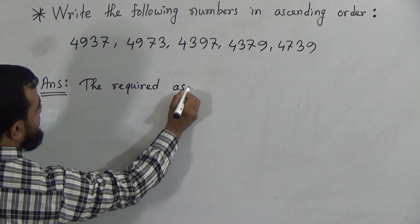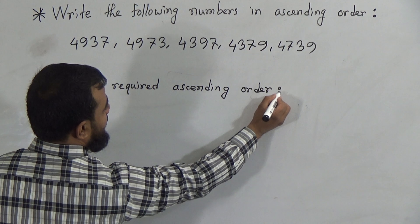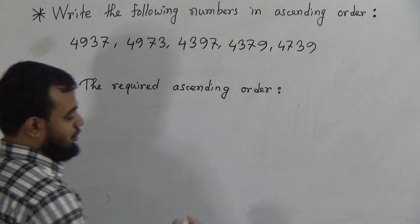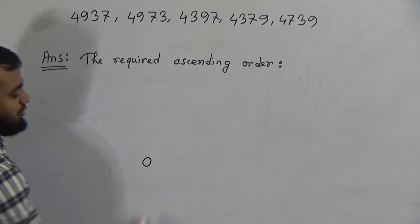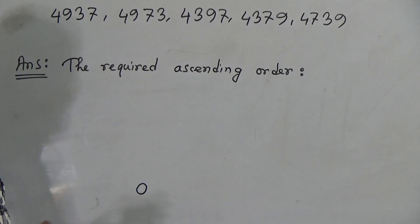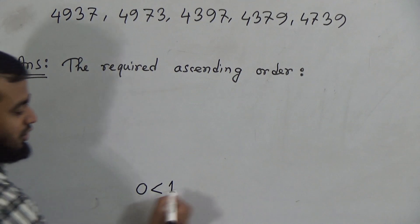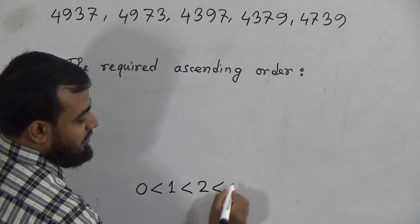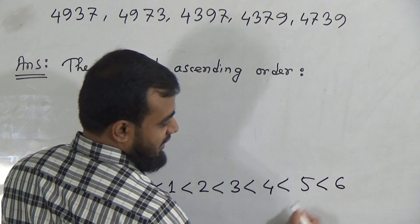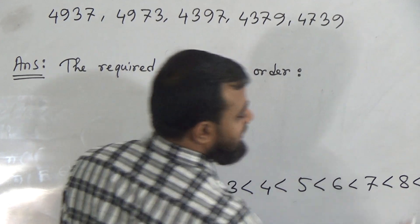Today's class is very important. First of all, we need to write down the required ascending order column. In ascending order, we know that zero is the smallest number. Ascending order means we need to arrange the numbers from smaller to greater. Zero is smallest, one is greater than zero, two is greater than one, three is greater than two, four is greater than three, five is greater than four, six is greater than five, seven is greater than six, eight is greater than seven, and nine is greater than eight.